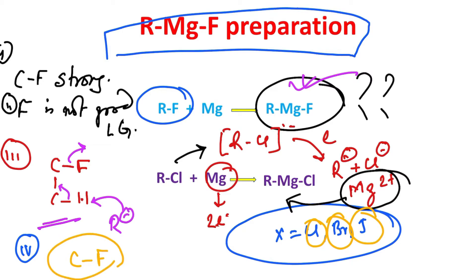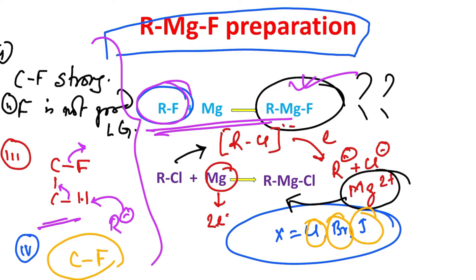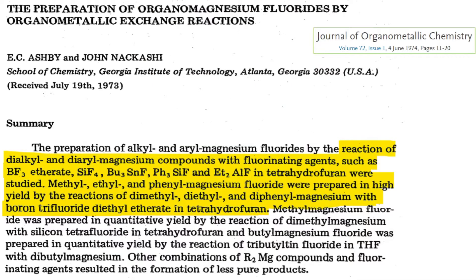Just think — this organofluoro compound RF is not that readily available, and all those other issues are present too. So why should we follow this path? Can we follow an alternate path? It is the responsibility of scientists to develop another methodology, and that is what I shall explain — which is why RMgF is rarely seen in the majority of cases.